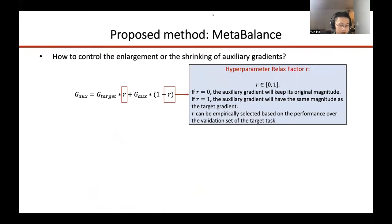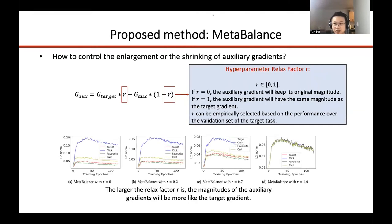The next important question is how to control the enlargement or shrinking of the auxiliary gradients. Here is the simplified equation to show how it works. We design a hyperparameter relax factor R, which is between 0 and 1. If R is 0, the auxiliary gradient will keep its original magnitude. If R is 1, the auxiliary gradient will have the same magnitude as the target gradient. R can be empirically selected based on the performance over the validation set of the target task. The figure illustrates the impact of R: when R is 0, the blue curve of the gradient is much larger than the target gradient, and when we increase R to 1, the auxiliary gradients are shrunk to the same level as the target gradient.